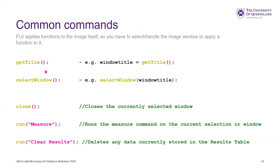Two useful commands: close — another one, keeps things tidy. And then run measure, which runs the measure command. Run clear results, clears the results. I showed you before how you clear the log window with the print command and the clear command. So those are just useful things you'll use in the coming exercise.